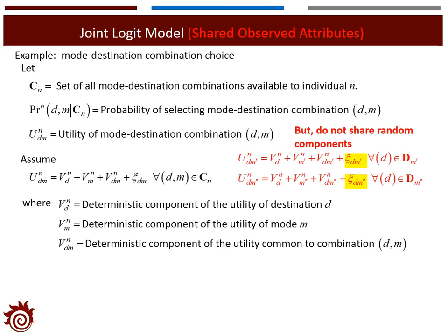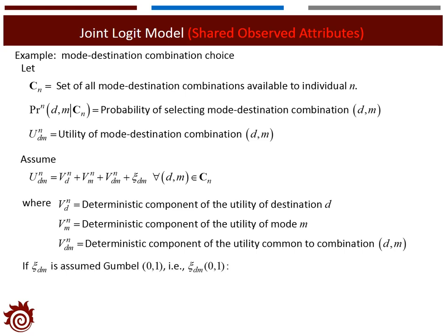We can see that the first three deterministic components are the observed attributes — specifically the shared observed attributes. For example, if we consider two combinations Dm prime and Dm double prime, both of them share the deterministic component Vd. However, they do not share the random components. The random term Ksi Dm is assumed to follow the standard Gumbel distribution, and the probability of taking combination Dm is derived from the MNL model.